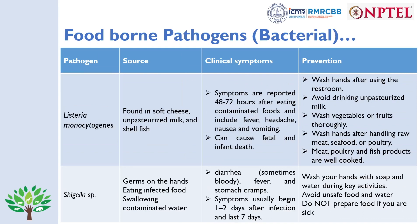Listeria is found in soft cheese, unpasteurized milk, and shellfish. Symptoms are reported within 40 to 72 hours after eating contaminated food and include fever, headache, nausea, and vomiting; it can cause fatal illness and infant death. Prevention includes washing hands after using the restroom, avoiding unpasteurized milk, washing vegetables and fruits thoroughly, washing hands after handling raw meat, seafood, or poultry, and ensuring meat, poultry, and fish products are well cooked.